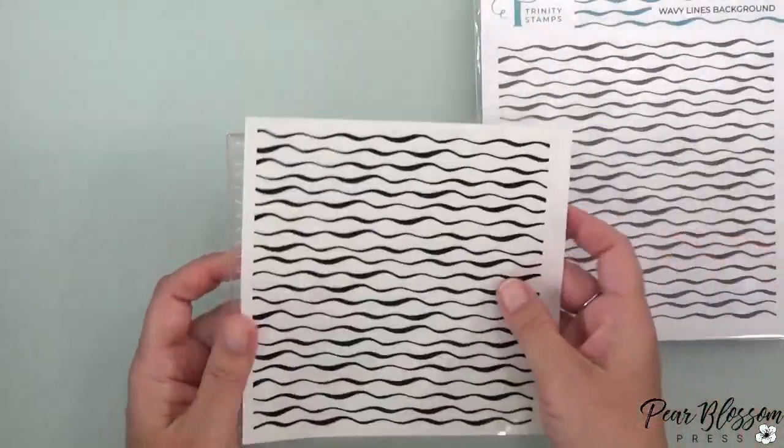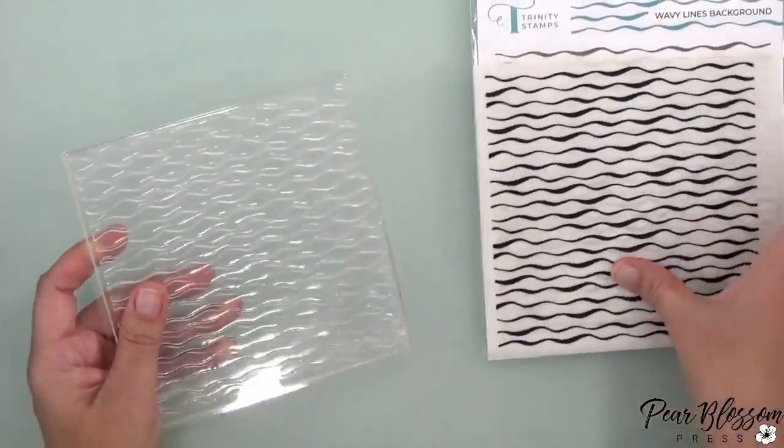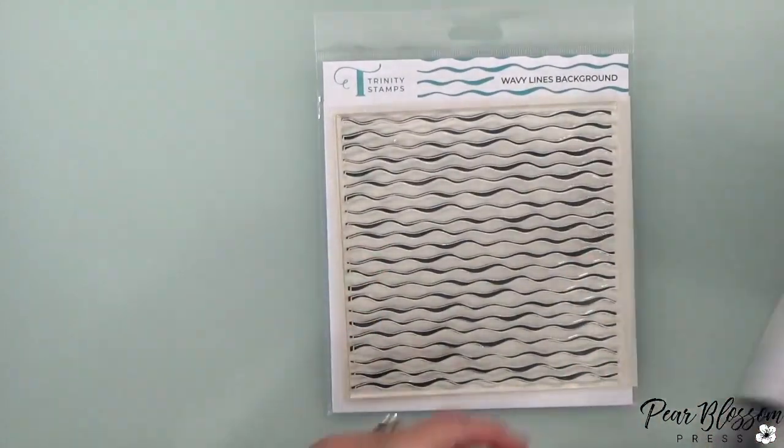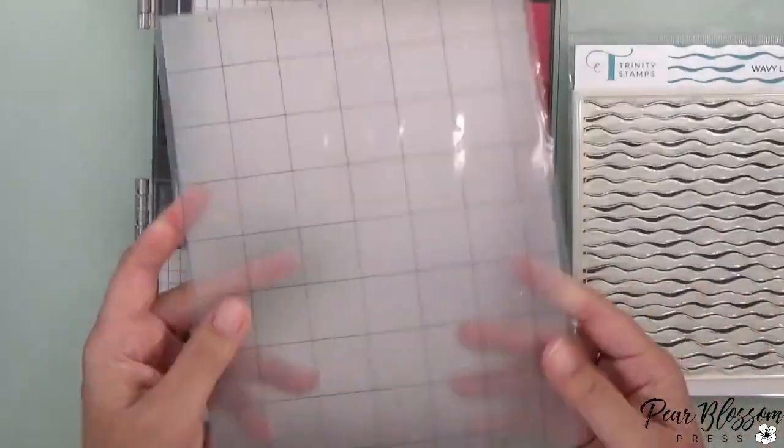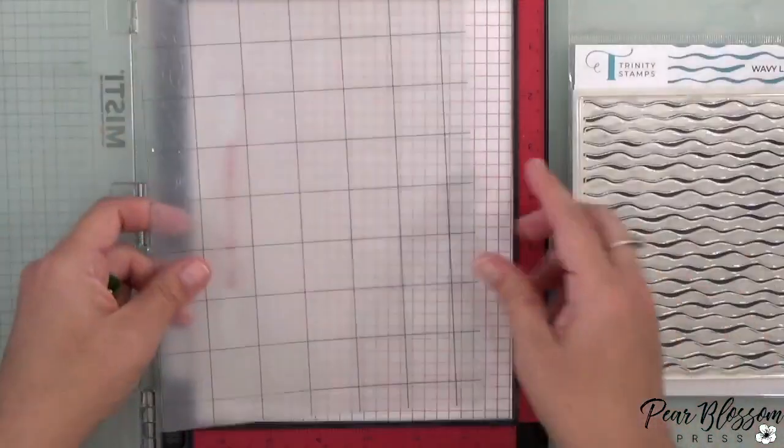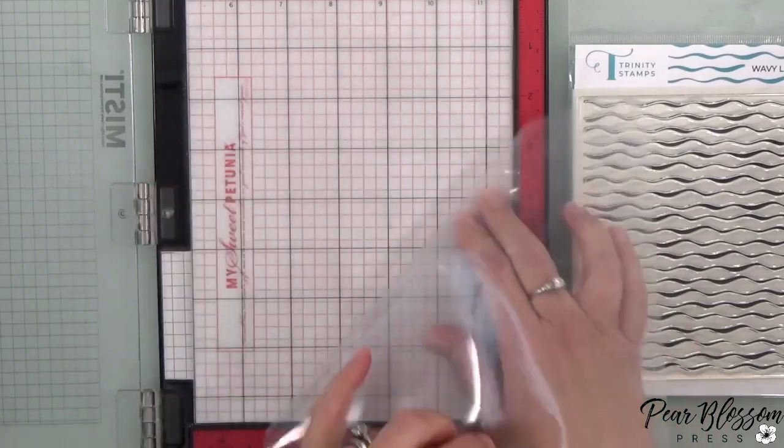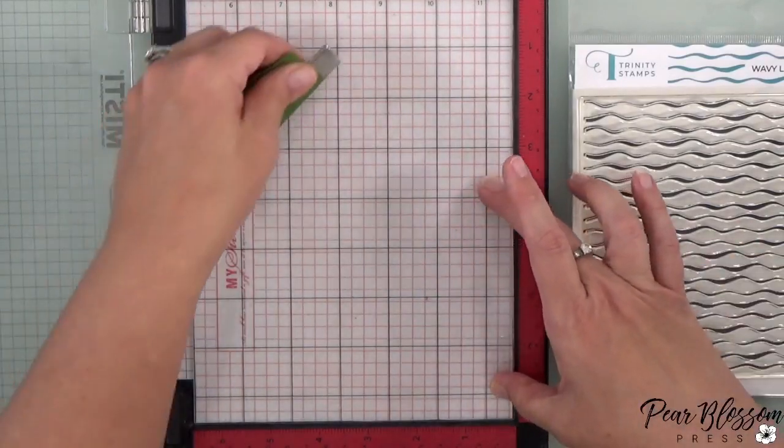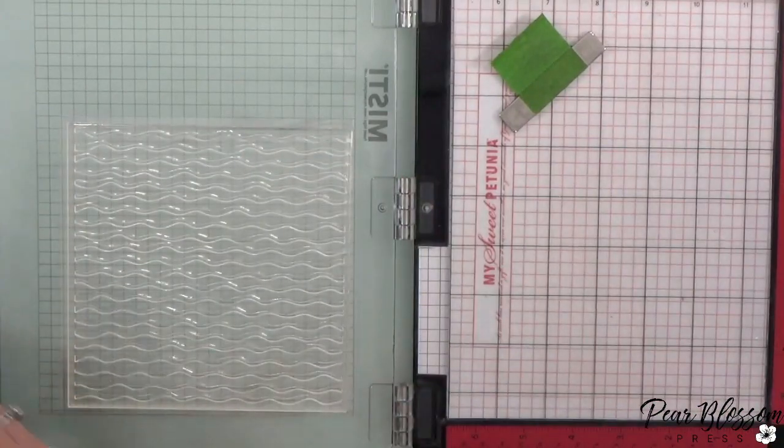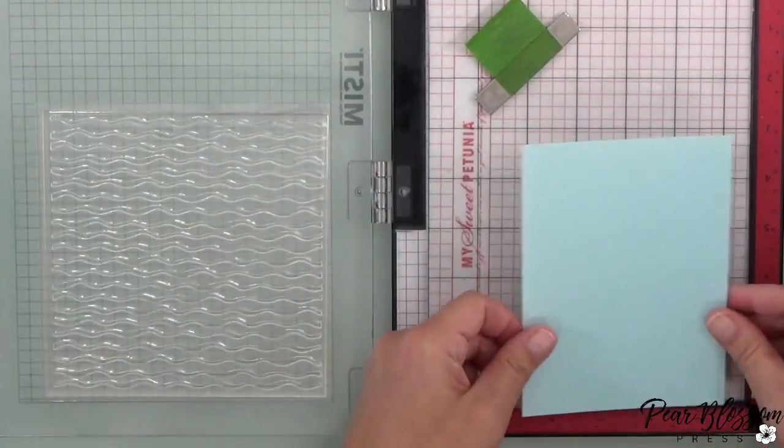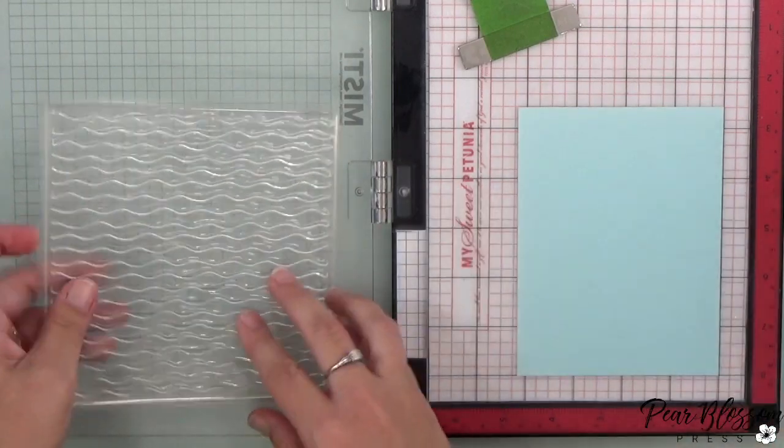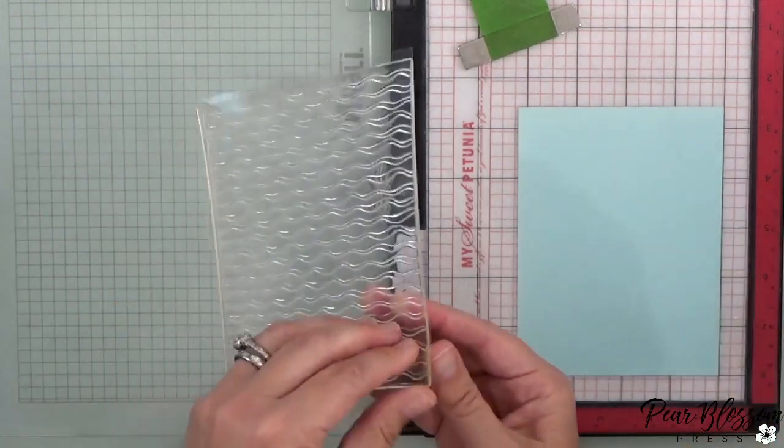So this is the wavy lines background stamp. Now you'll notice it's big—it's like five and a half by five and a half, and it comes with a separate sticker that you can put on the acetate. When I use big stamps like this for my MISTI, I like to put a sticky grid inside. That's going to help hold my paper down, and then that way I don't need to put a magnet on my sheet of paper that I'm stamping.